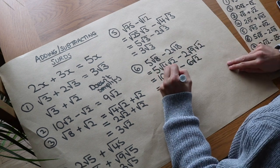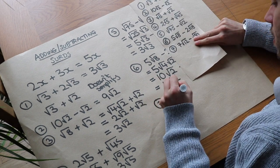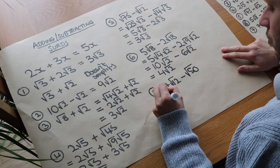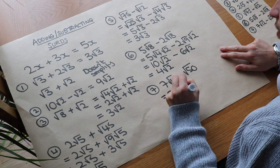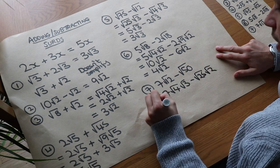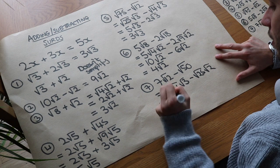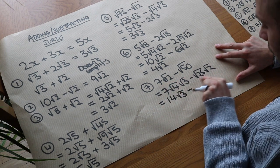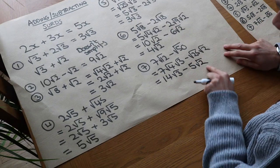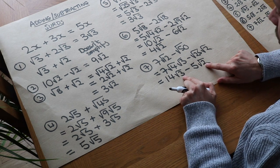And finally, we've got 7 root 12 minus root 50. Well, root 12 could be written as root 4 root 3, and root 50 can be written as root 25 root 2. So 7 times 2 is 14, so it's 14 root 3. And then that's just 5 root 2, so it's minus 5 root 2. And that, we can't actually simplify. That was a trick question, because these two numbers under the root are different.